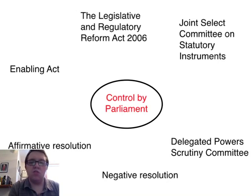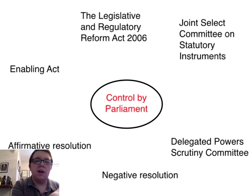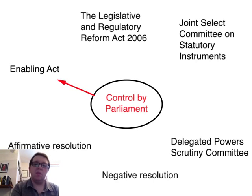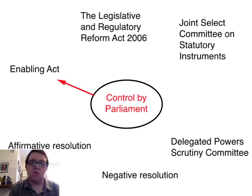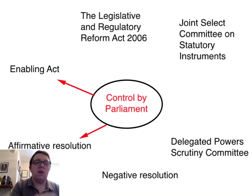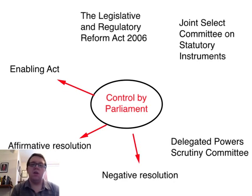There are six types of control by parliament that you need to know and we're going to review each one. The enabling act is the act of parliament that sets out in writing the transfer of power from parliament to, say, the government minister — so it enables him or her to create a statutory instrument. The enabling act may also set down an affirmative resolution or a negative resolution before the statutory instrument can actually be created.